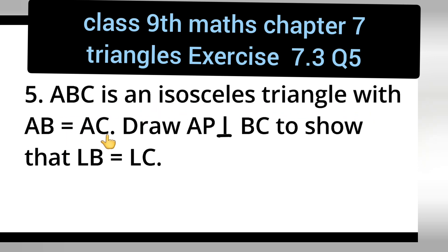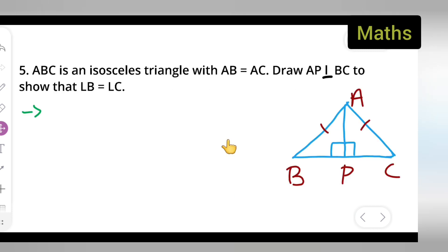ABC is an isosceles triangle with AB equal to AC. Draw AP perpendicular to BC to show that angle B is equal to angle C. First, you have to draw the figure.